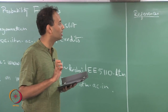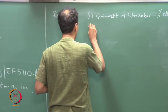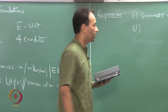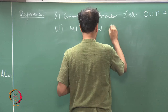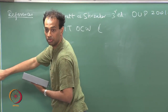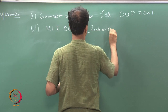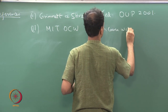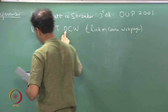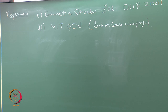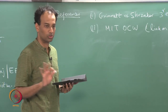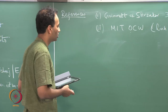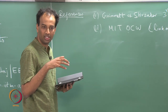There is another open-source reference which I will follow quite a bit — it is MIT OCW, MIT OpenCourseWare, and there is a link on the home page. These two are roughly at the level at which we will be doing this course. There are other textbooks which are either at a slightly more elementary level or at a more advanced level.